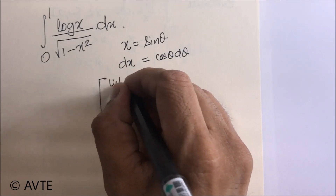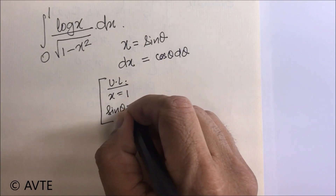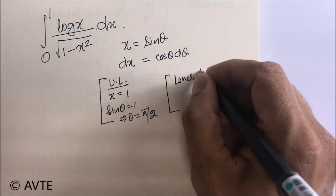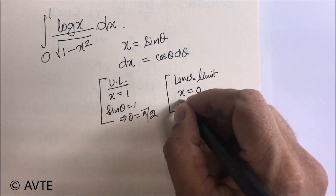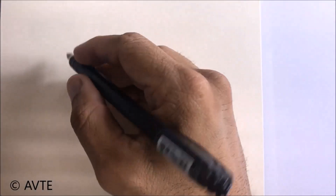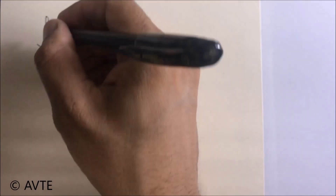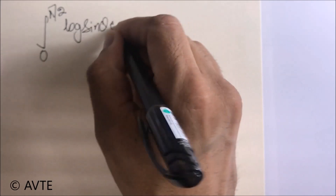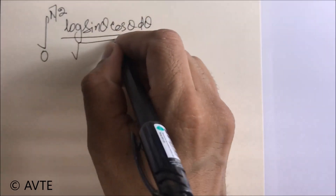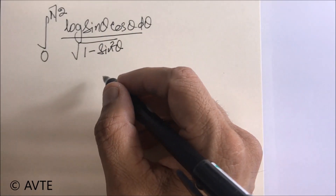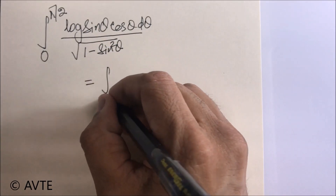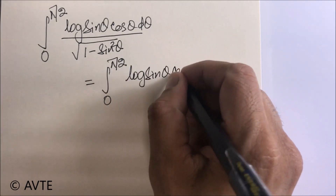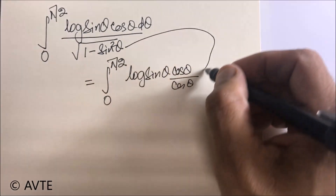We also need to change the limits. The upper limit: x = 1 means sin θ = 1, so θ = π/2 (the principal value). The lower limit: x = 0 means sin θ = 0, so θ = 0. After changing the limits, the question turns to ∫₀^(π/2) log(sin θ) · cos θ dθ divided by √(1 − sin²θ). That equals √(cos²θ) = cos θ in the first quadrant, so the cos θ cancels, leaving ∫₀^(π/2) log(sin θ) dθ.